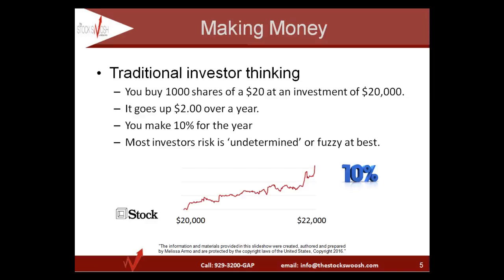Traditional investor thinking says that if you buy 1,000 shares of a $20 stock, you have an investment of $20,000. If the stock goes up $2 over the year, you make 10% for the year — this would be considered a good investment. Most investors' risk is undetermined or fuzzy at best, meaning they usually don't have a plan for when to get out if the play doesn't work. We've seen this evident during major market corrections, where investors often get out with large losses they didn't originally plan on.